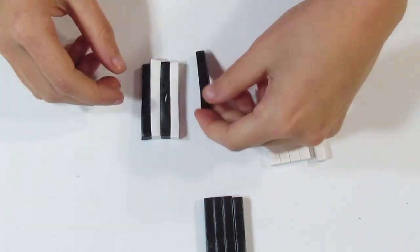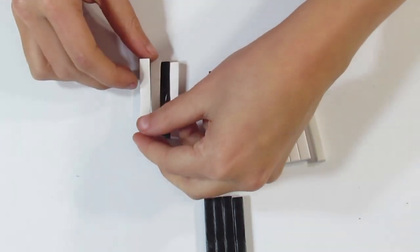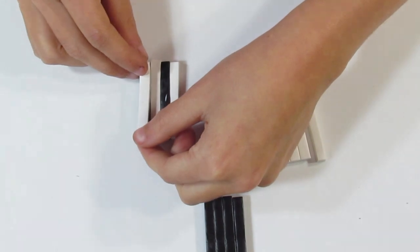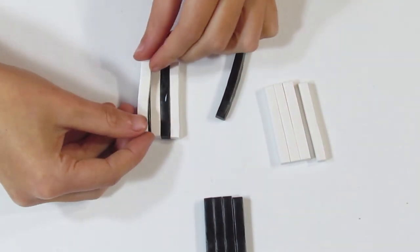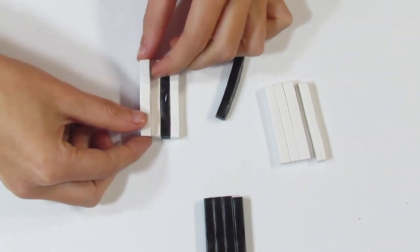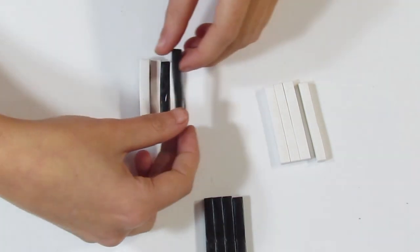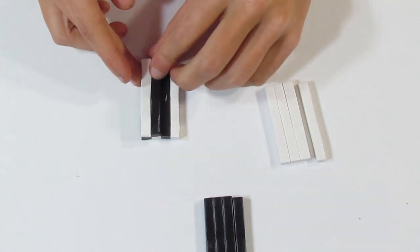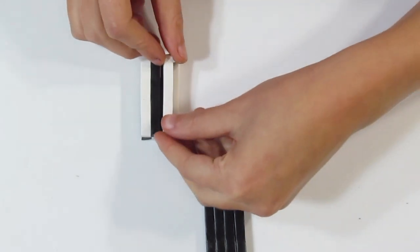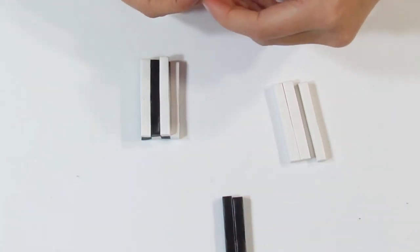When you're happy, you can start the next layer, which is white on black and black on white. Just like this. You'll just carry on doing this until you've completed your cane.